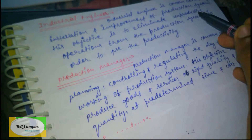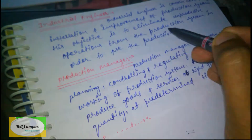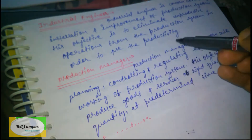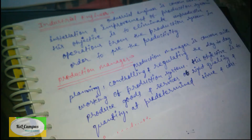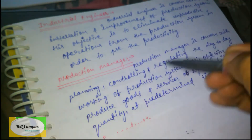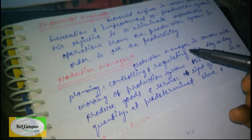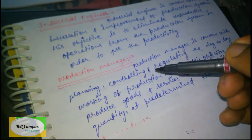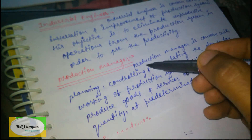The main objective of the Industrial Engineer is to eliminate unproductive operations from the production system in order to increase productivity. Unproductive machines and operations are eliminated so that production becomes efficient and faster, so that we can get the product at the desired time.